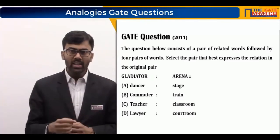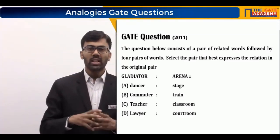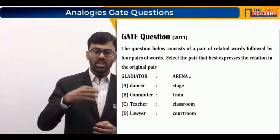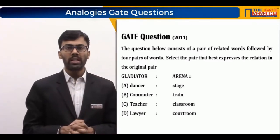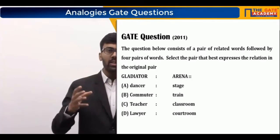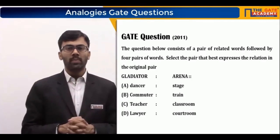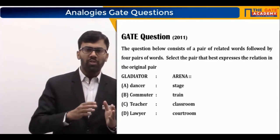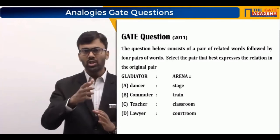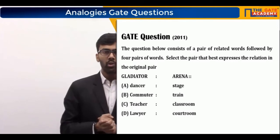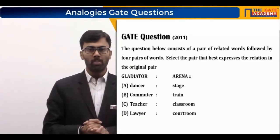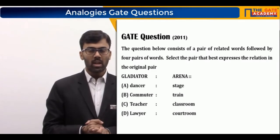When a dancer performs on a stage, it is expected to be seen by an audience for entertainment. Similarly, a gladiator performed in an arena for the entertainment of kings, nobles, and general audiences. That is why dancer and stage have a very similar relationship to gladiator and arena. The relationship should be as close as possible to the original pair, so the correct option is A — dancer : stage.